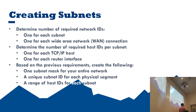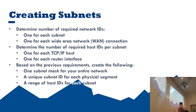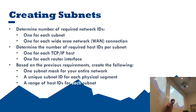Going through the guidelines for creating subnets: first, figure out how many network IDs you need. You count every subnet you want to have, plus one for every WAN. So if you want five subnets and you have two WANs, you add those together — five plus two — so you'd need seven network IDs total. Does that make sense?